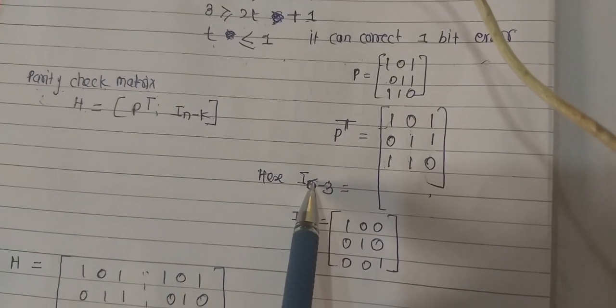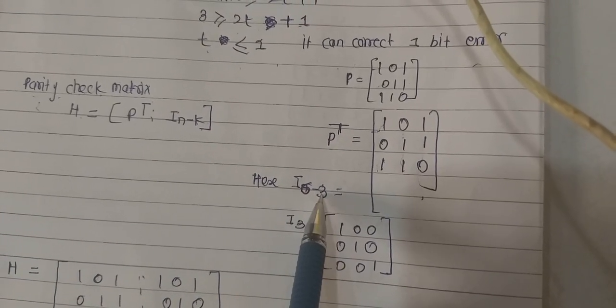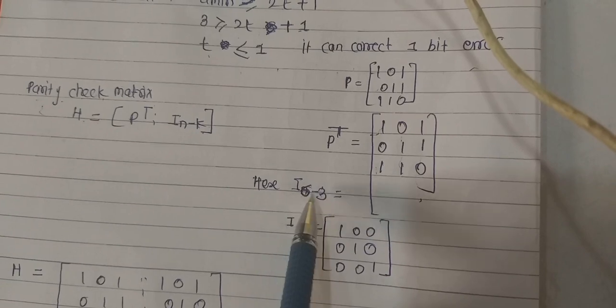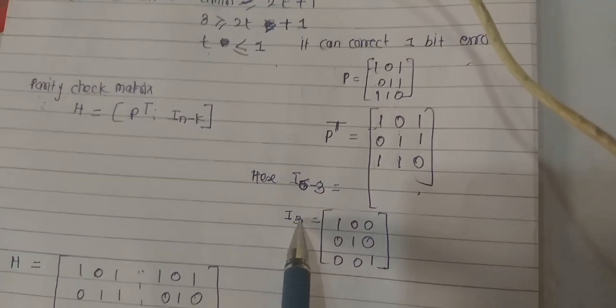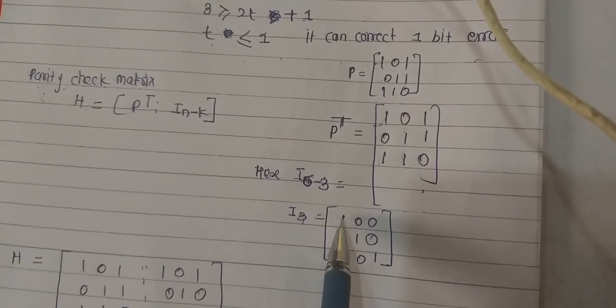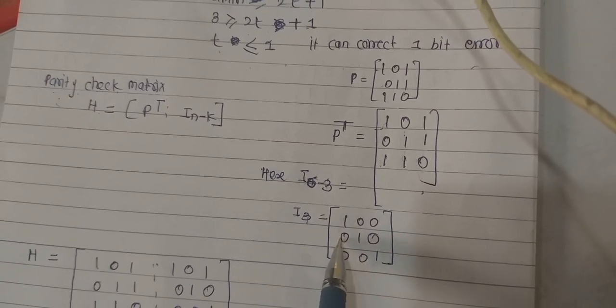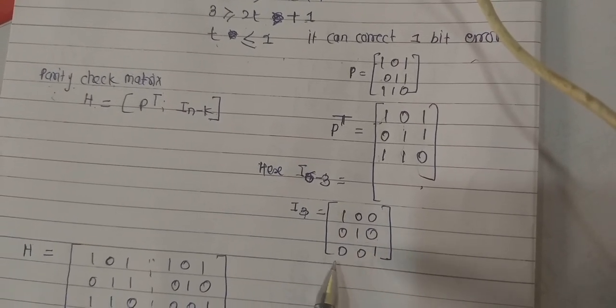I of N minus K becomes N is 6 and K is 3. So I of 6 minus 3 becomes I of 3. 3 by 3 identity matrix: 100, 010, 001.